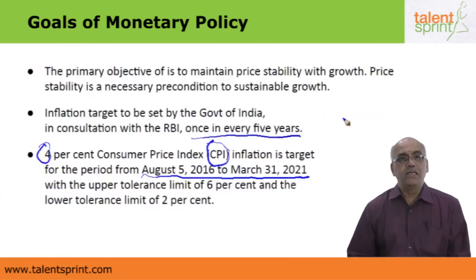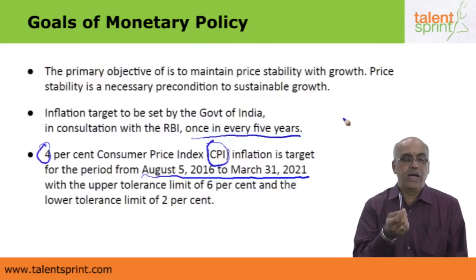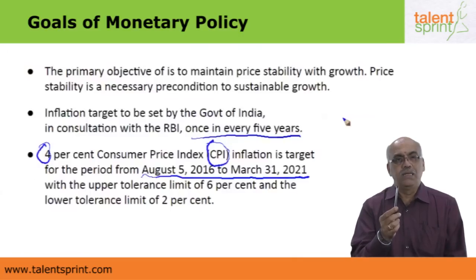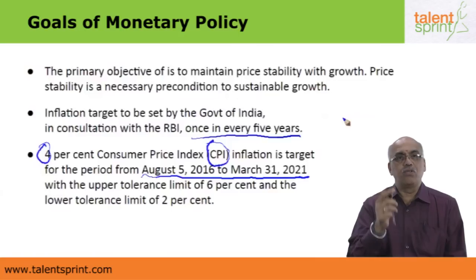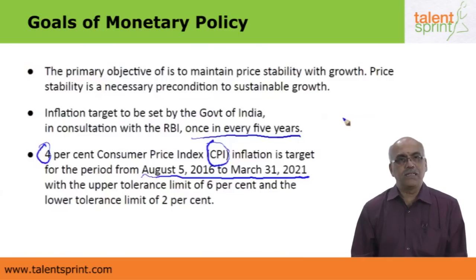The CPI, or Consumer Price Index, is the price at which the ultimate customer buys a particular product. For example, if this pen costs 10 rupees this year and we assume an inflation rate of 4%, the price cannot go up by more than 40 paise — meaning next year it becomes 10.40 rupees, and thereafter multiples of 4% for every year over the next five years.